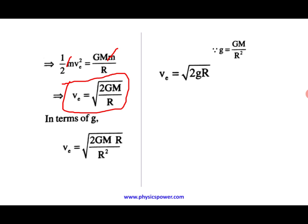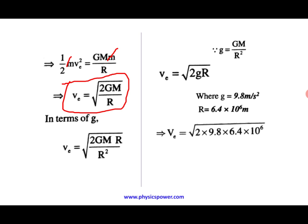This is the escape velocity of a planet or the Earth. If we consider g as 9.8 m/s² and R for the Earth as 6.4 times 10 to the power 6 meters, substituting those values gives the escape velocity on the surface of the Earth as 11.2 km per second. If you throw any body with this minimum velocity of 11.2 km/s in any direction, it cannot come back to the Earth's surface — that is the escape velocity.